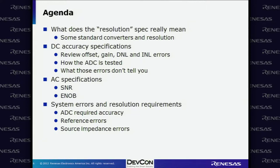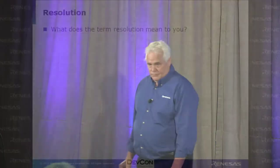The agenda: we're going to talk about what the resolution spec really means, look at DC accuracy specs — gain, DNL, and INL. We'll talk about how an ADC is tested, which is important because once you understand the problems with testing it, you understand why some specifications are a little gray. We'll look at AC specifications — signal-to-noise ratio, effective number of bits, signal-to-noise and distortion. Finally, we'll talk about system errors and resolution requirements: how to choose the A-to-D, how many bits you really need, including reference errors and source impedance errors.